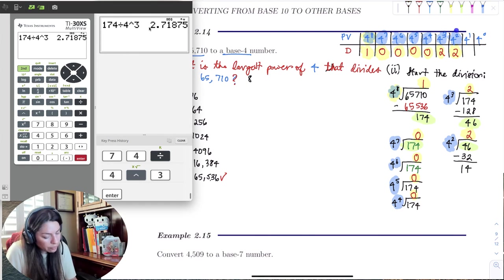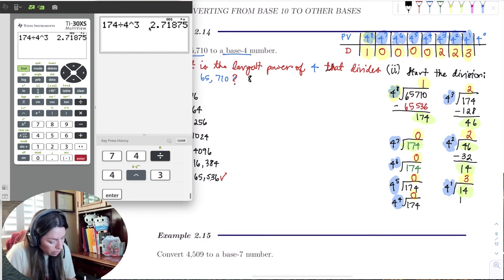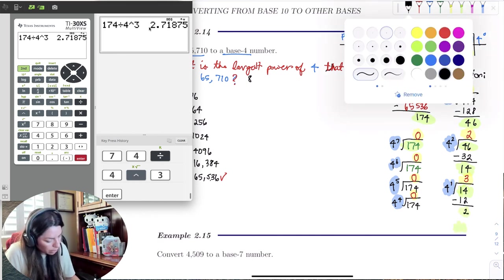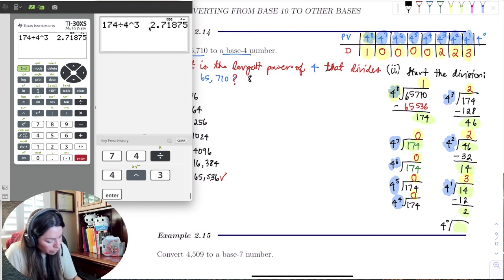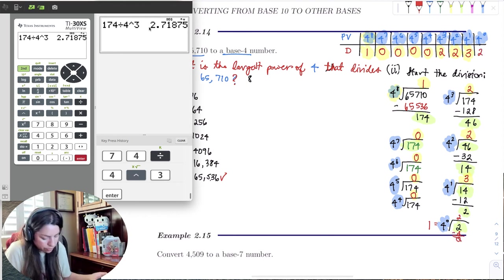And now I work towards the next place value over, which is 4 to the 1st. So I get 4 to the 1st divided into the remainder that I have here. 4 to the 1st goes into 14 three times. And I put 3 here in the digit area of the place value. And now I can go ahead and find a remainder. 4 times 3 is 12, which is 2. So it's a little redundant to have to do this because we already automatically know that the answer is going to be this remainder 2. Because 2 times 1 is 2 and 2 minus 2 is 0. So it all works out.